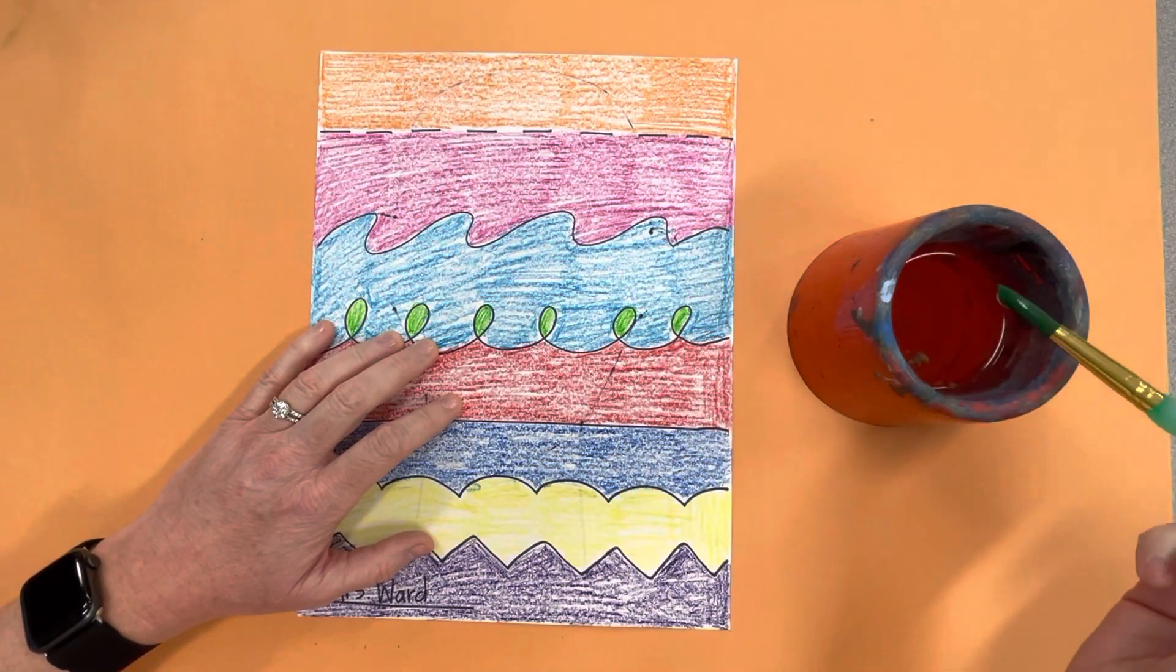Be very careful if you get this on your hands that you don't wipe it on your clothes. Take your brush and when you pick it up, if it drips just touch the brush to the inside of the rim and it will stop dripping.